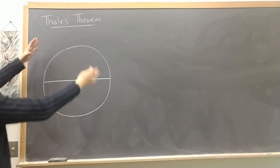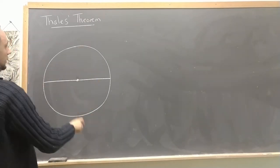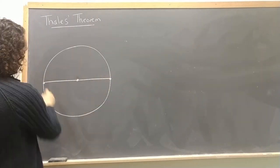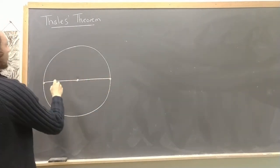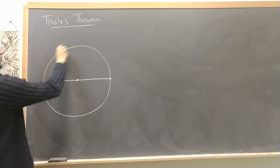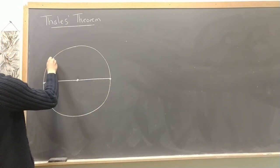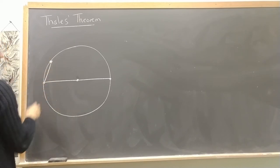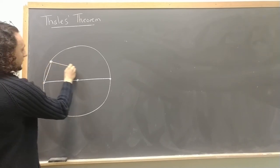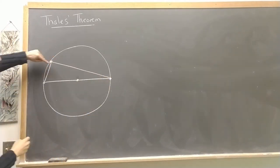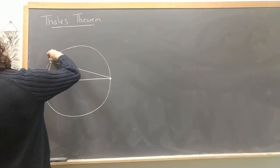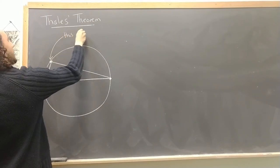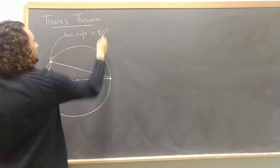But what it states is you start with a circle. So here we have a circle and I've drawn the diameter through it, a line passing through the center. And Thales' Theorem says that if I take any point on the circle, any point at all, say this point, and I connect it to these two endpoints of the diameter, then this angle right here that I get, this angle, is 90 degrees.